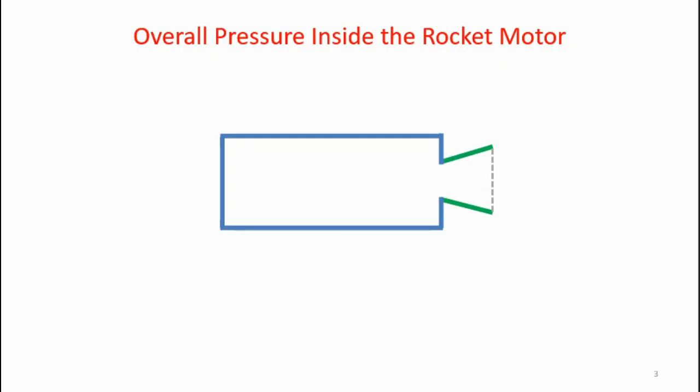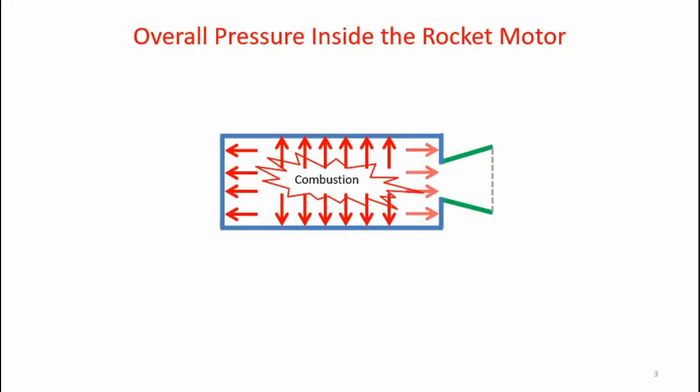Now here's what the pressure profile looks like inside the rocket motor. First of all, we have combustion that creates pressure forces on the top of the casing, on the bottom of the casing, on the front and the back of the casing. Now the upward and downward forces don't contribute to the leftward force creating the thrust in this picture, so we can eliminate those.